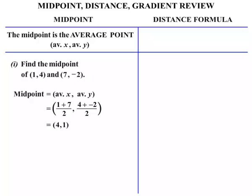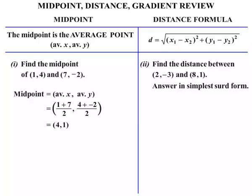Now the distance formula. Distance equals the square root of (X1 minus X2) squared plus (Y1 minus Y2) squared. In part 2, we're asked to find the distance between (2, -3) and (8, 1), and answer in simplest surd form. So our distance formula: (X1 minus X2) squared plus (Y1 minus Y2) squared. You certainly need to be remembering that one.